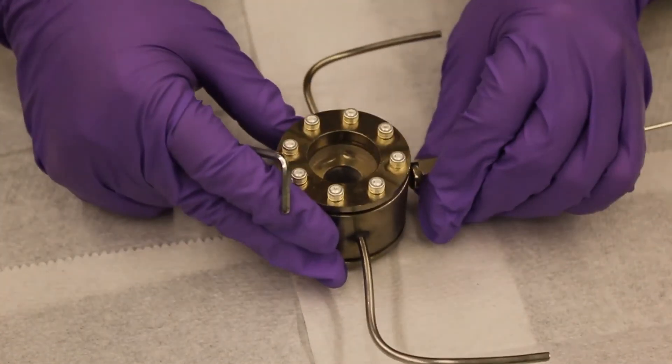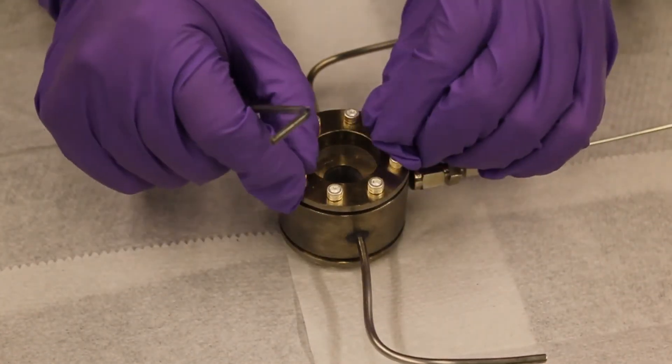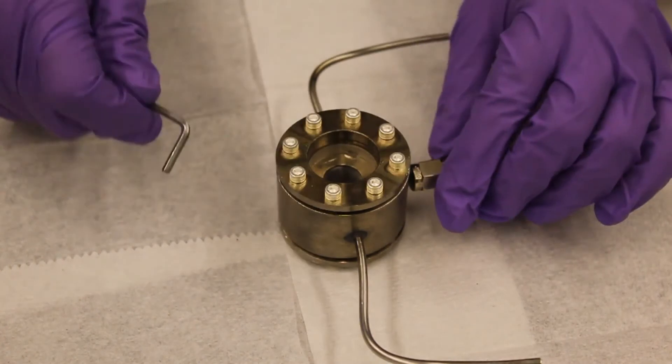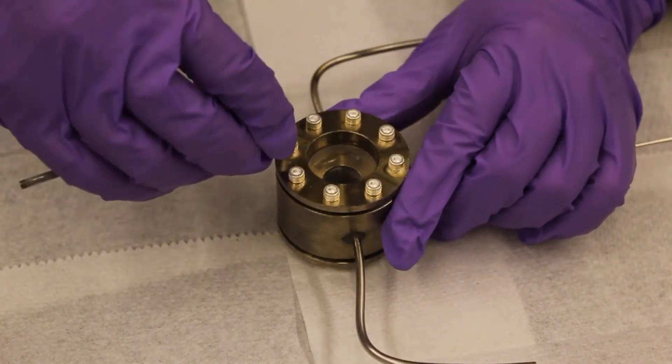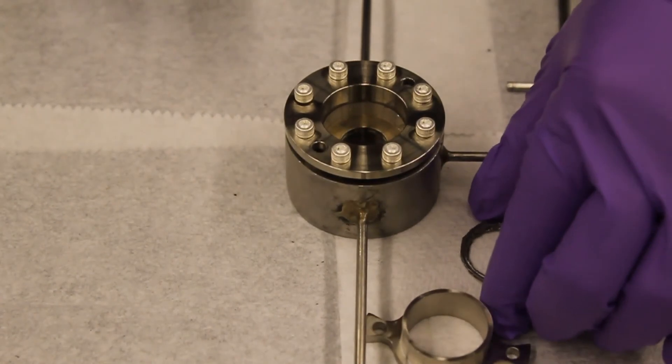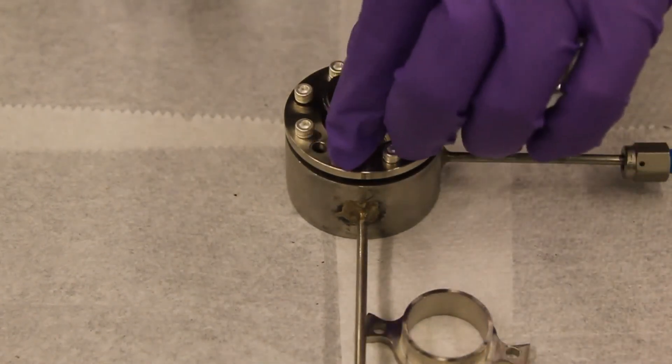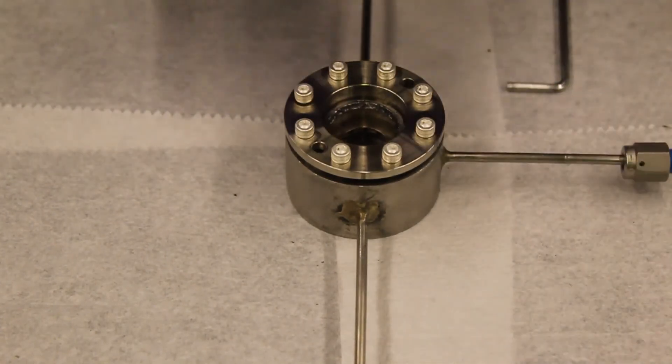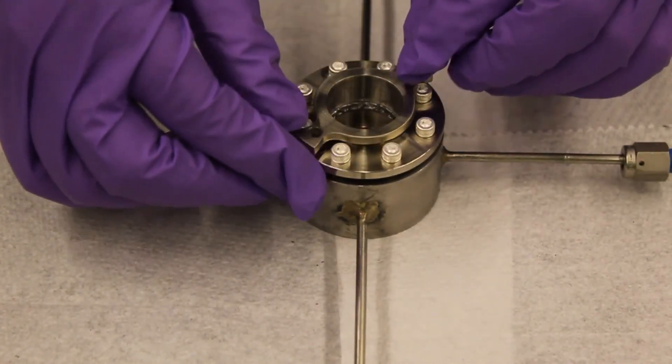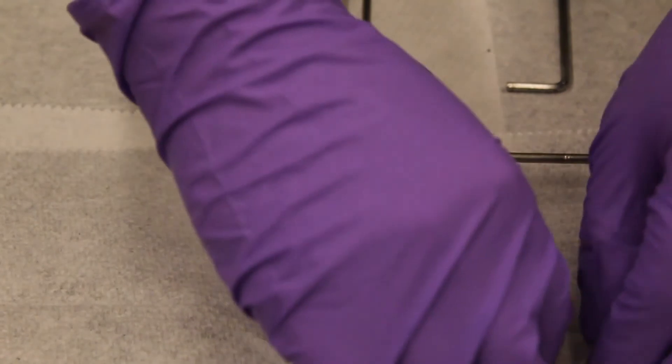Repeat the same steps for the other side of the IR cell. In this case, we use silver-plated screws to avoid the need to use anti-seize agent. Place the window retainer on top of the calcium fluoride window with just enough pressure to hold the window in place.